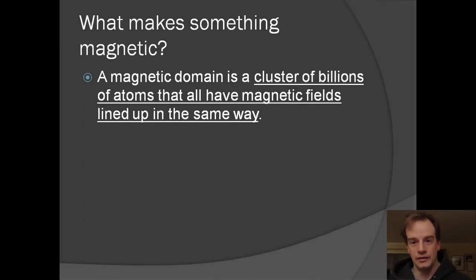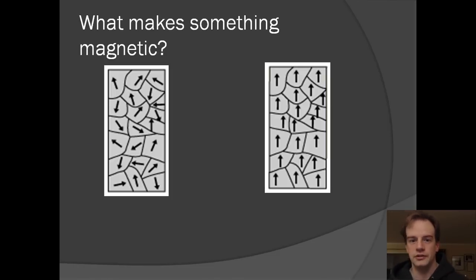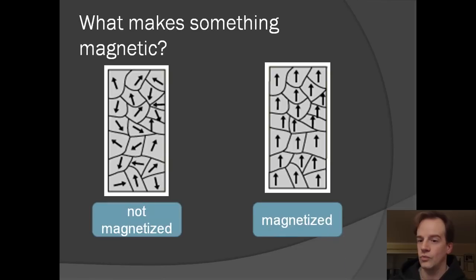Now we have these magnetic domains that are a cluster of billions of atoms that all have magnetic fields lined up in the same way. In a magnetized material, all or most of the domains are arranged in the same direction. So which of these do you think is the magnetic material? One on the left, not magnetized. One on the right, magnetized.